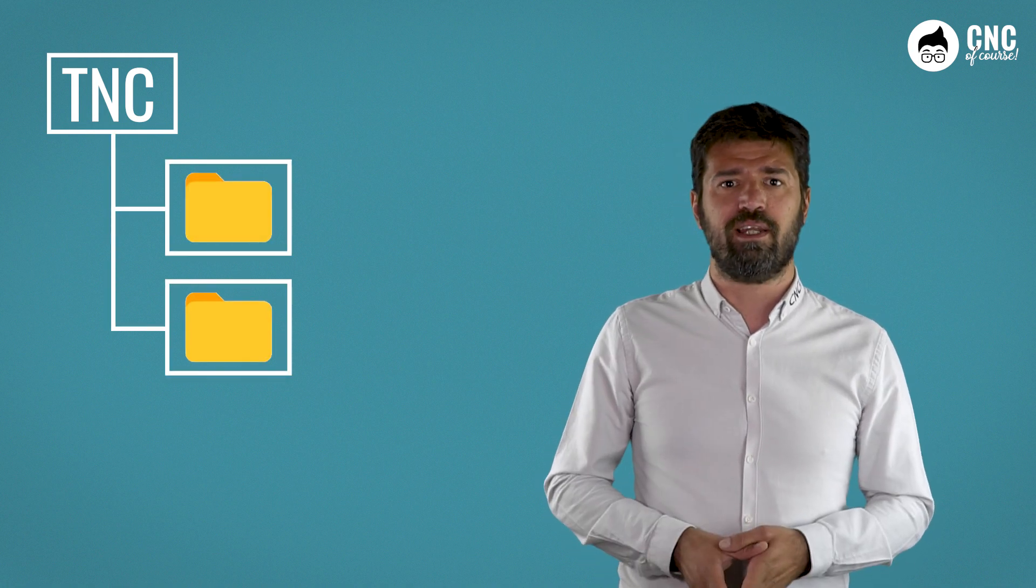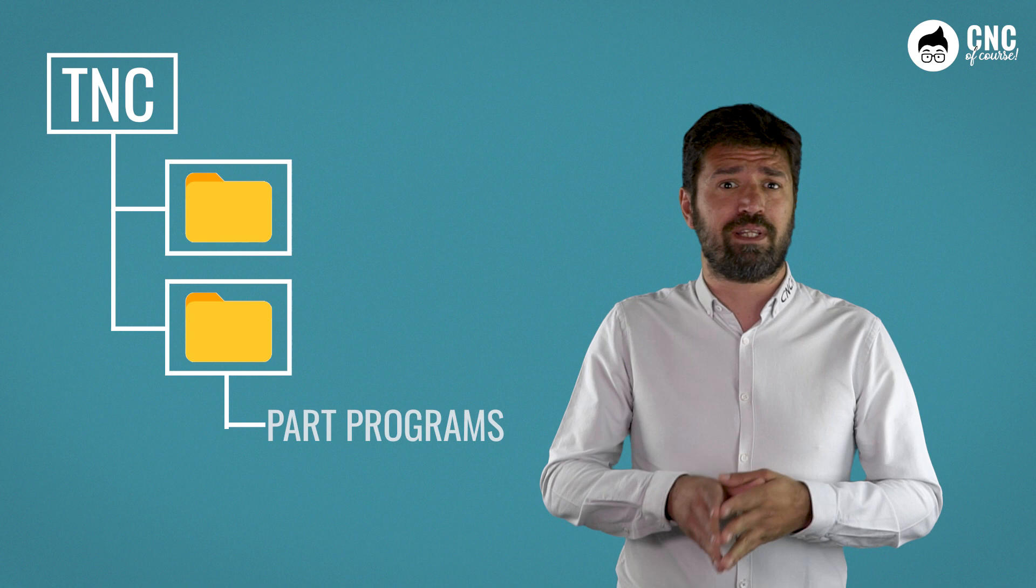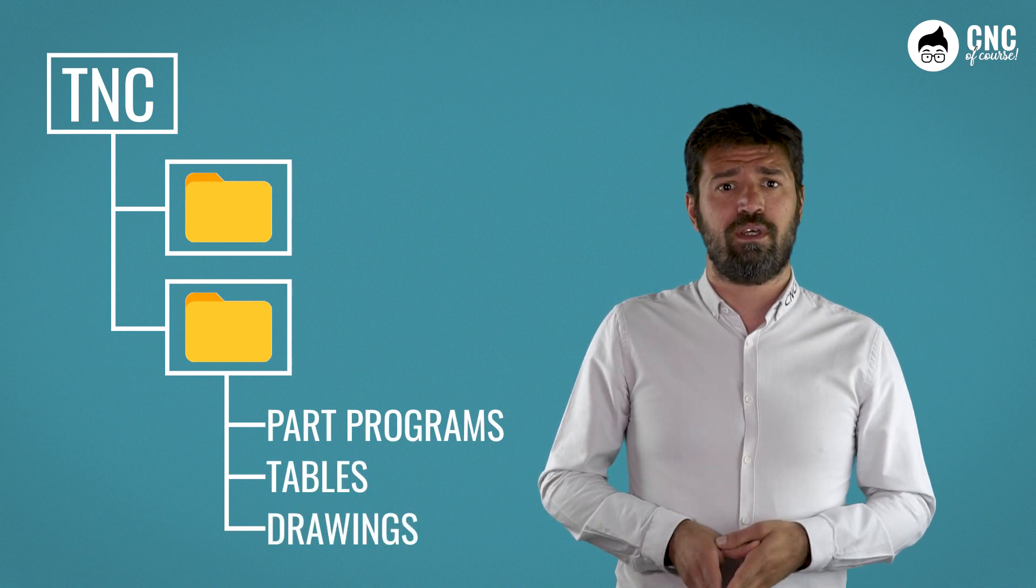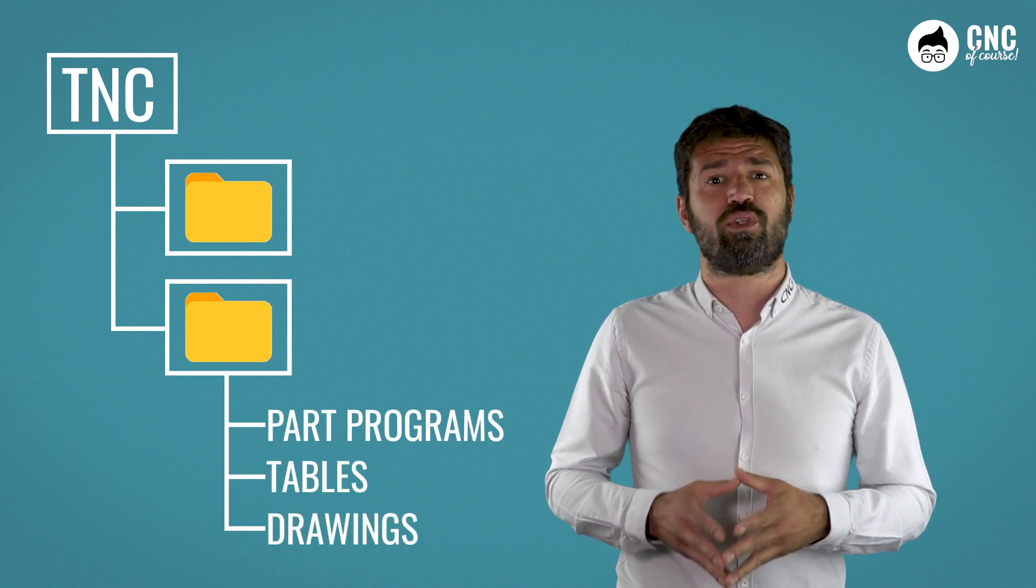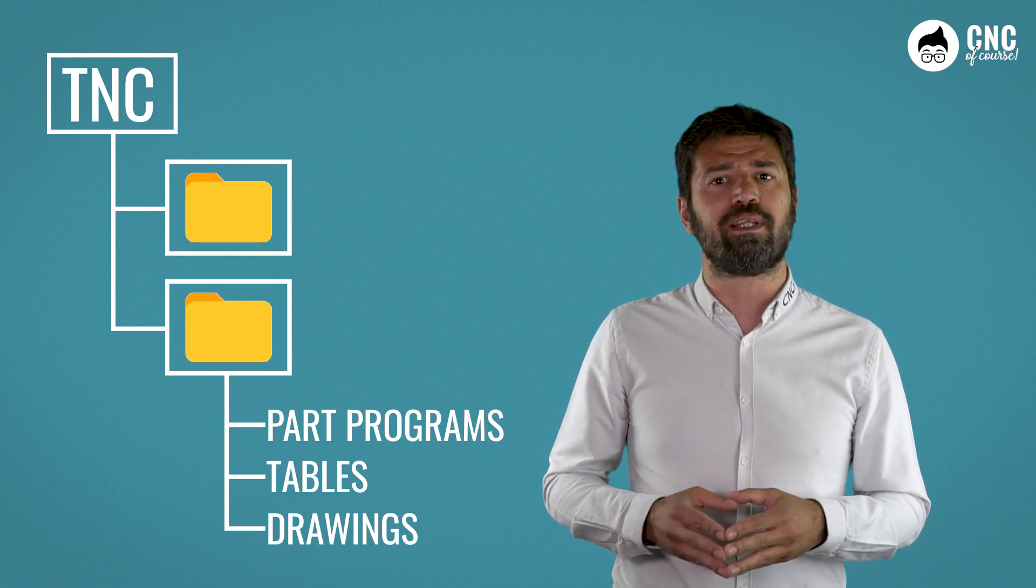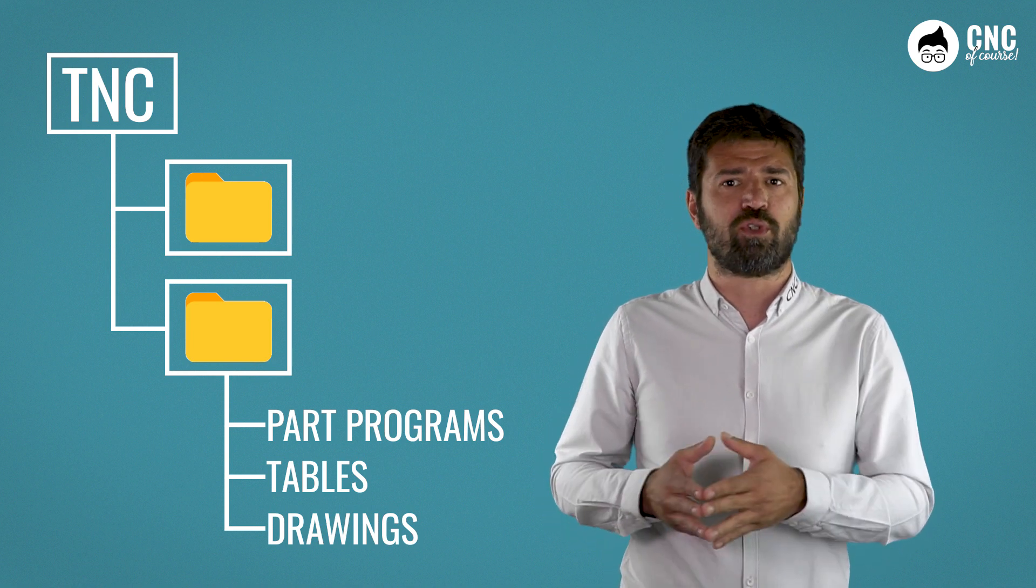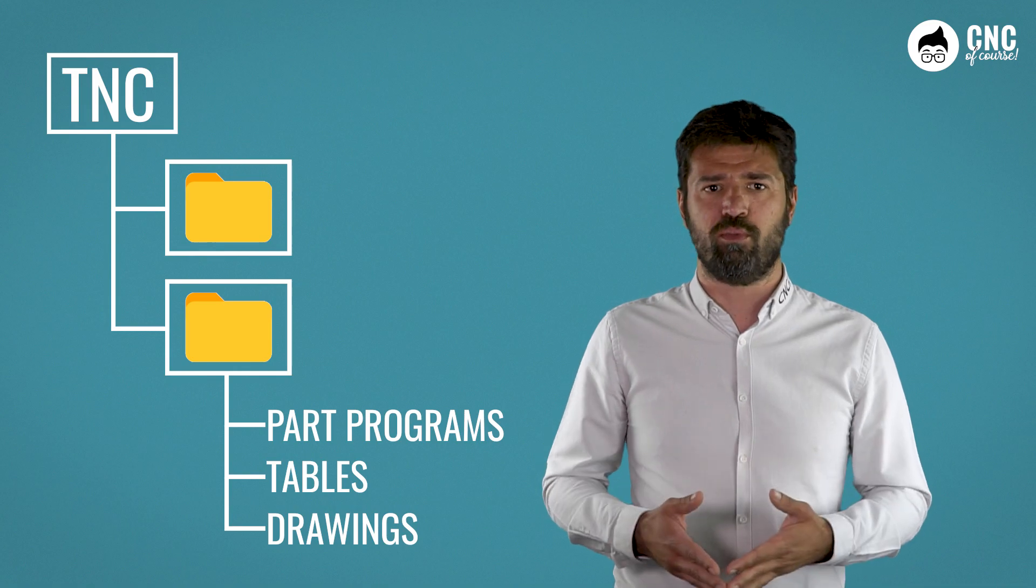Let's continue by looking at the structure of your control. The beating heart of everything is contained in the TNC, and you can organize your work either by creating directories or simple files. Files can be part programs, tables, or even drawings. With this structure, you can divide the different parts of your work into several files and keep them in the same directory, which can have the name of the customer or the job number.